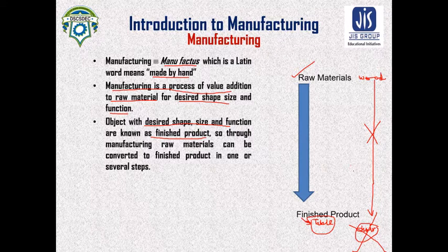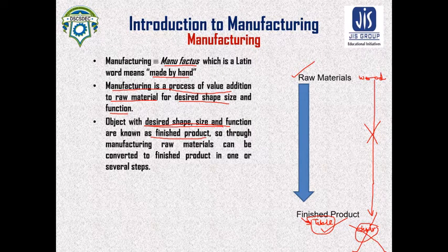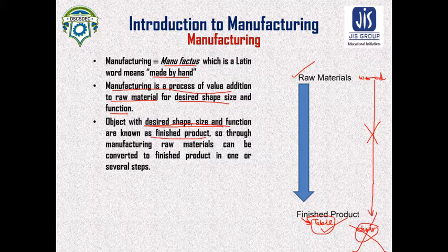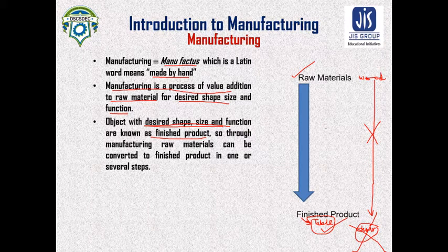An object with the desired shape, size, and function is known as the finished product. So if we desire a table, then our finished product is a table. If we are getting a chair instead, then there is some fault in our manufacturing or value addition process.